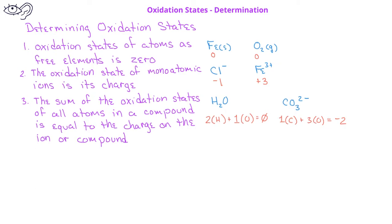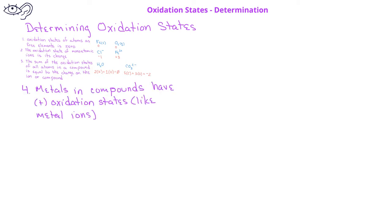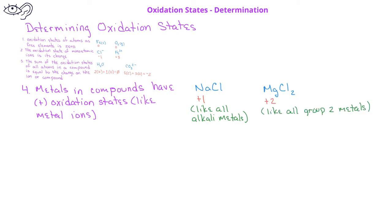The next guideline indicates that metals in compounds will have a positive oxidation state similar to their ion charge. For example, sodium in sodium chloride would have an oxidation state of plus one. The alkali metals, or group one metals, have oxidation states of plus one when in compounds. On the other hand, magnesium in magnesium chloride would have an oxidation state of plus two, because the alkaline earth metals, or group two metals, have an oxidation state of plus two when in a compound.